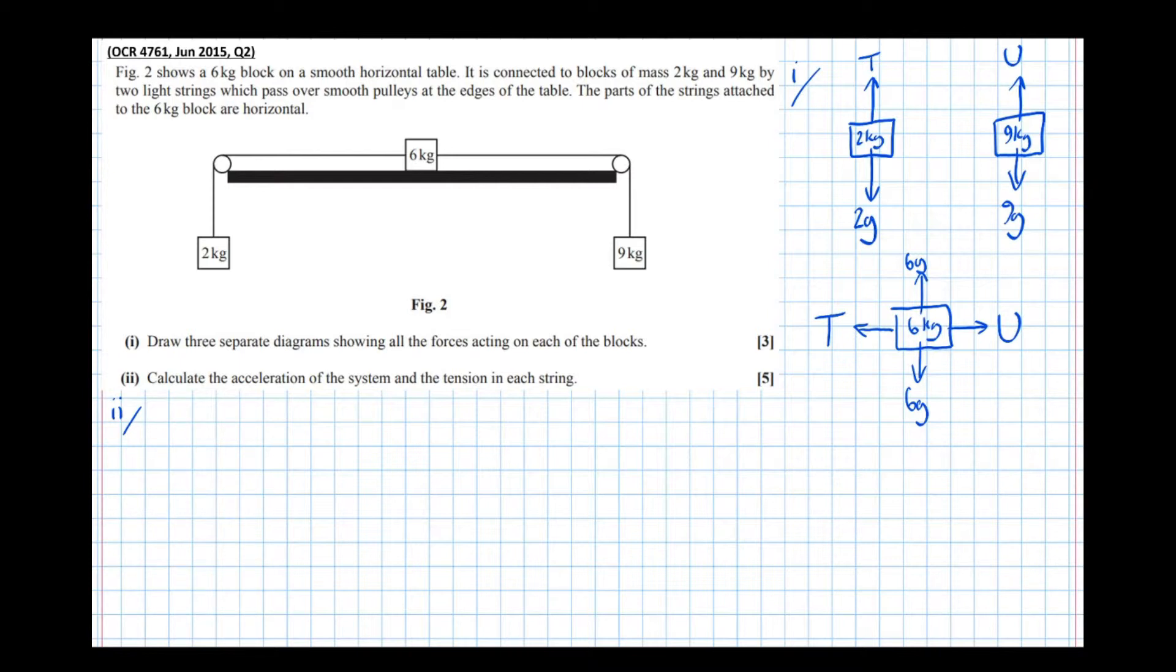I can see from the system here that the nine kilogram weight is going to beat the two kilogram weight. So the system is going to be moving this direction here. So the two kilogram block is going to be moving up. So the direction of motion is up. Therefore I'm going to take up as my positive direction. So considering all forces pointing up to be positive, I get T take 2g equals mass times acceleration.